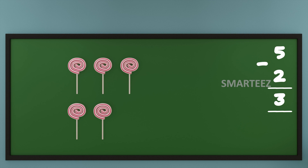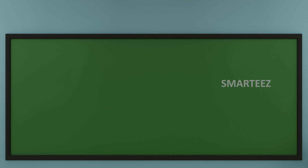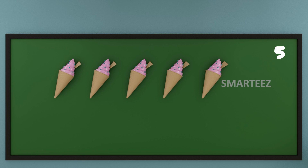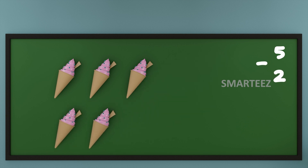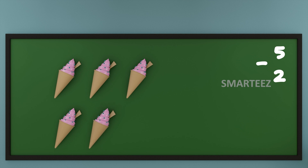Let's try this with ice creams. Take a look. That's five ice creams in total. Let's subtract two ice creams out of it. That's one ice cream. And that's a second ice cream. What we have left is one, two, and three ice creams.